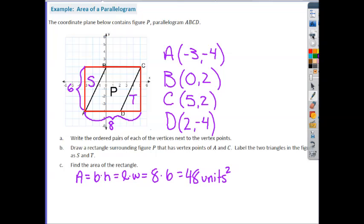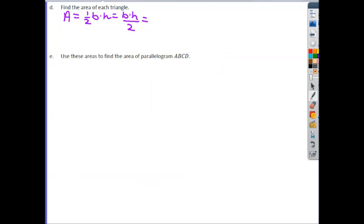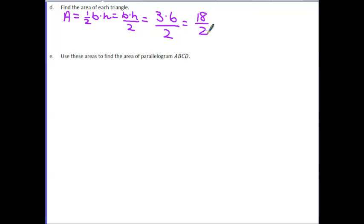So we need to know the base and the height of each triangle. So here, the base, we can count, is 1, 2, 3 units across. And has a height, which would be the same as our rectangle here, of 6. So let's go ahead and fill those in. Base of 3, height of 6, divide by 2. So 6 times 3 is going to give us 18. Divided by 2 leaves us with an area of 9 for each triangle. And this is 9 units squared.